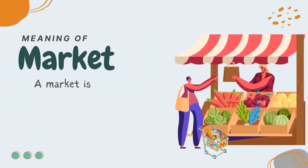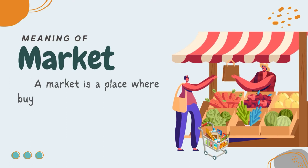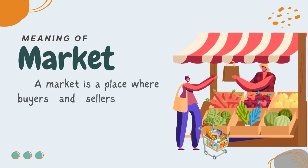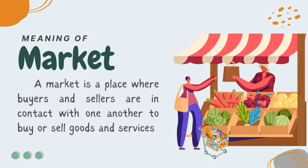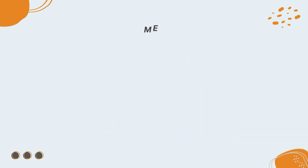A market is a place where buyers and sellers are in contact with one another to buy and sell goods and services. It can even be on the internet, because today people market their products online and others pay for those products. That is a market — a place where buyers and sellers are in contact.